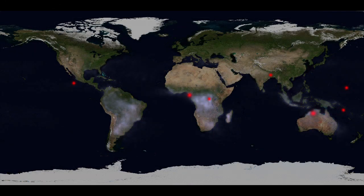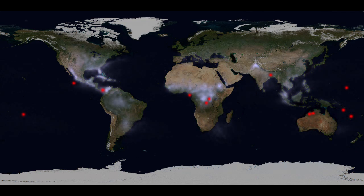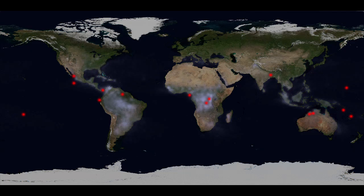These dots mark TGFs observed by Fermi's gamma ray burst monitor during the spacecraft's first eight months of operations. Researchers estimate that there may be as many as 500 TGFs each day.